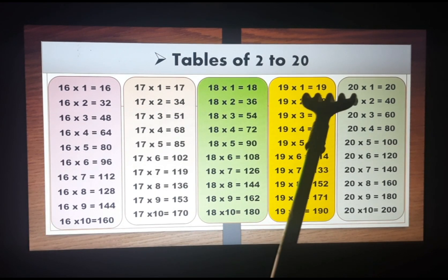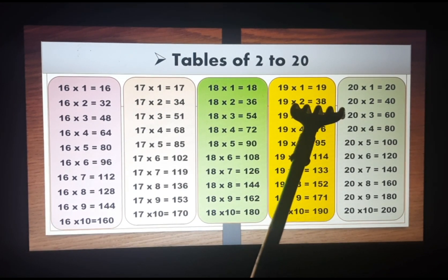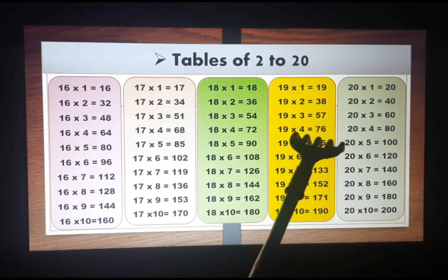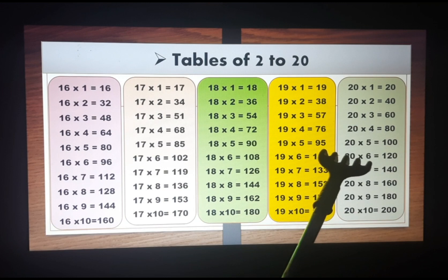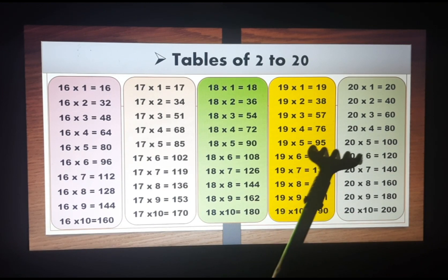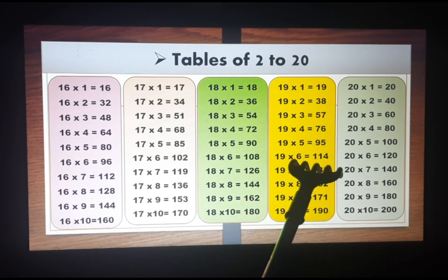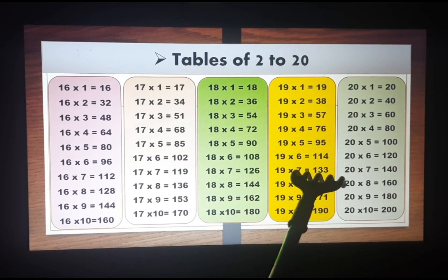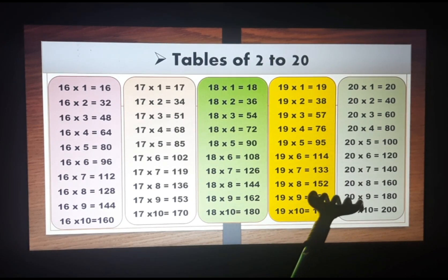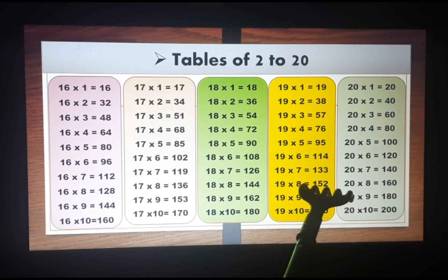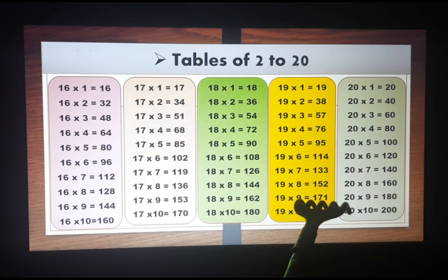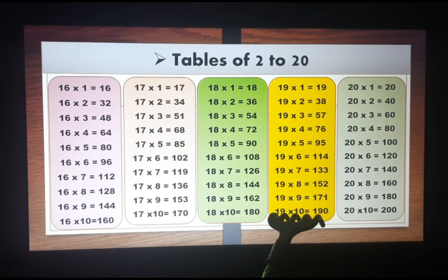Nineteen ones are nineteen, nineteen twos are thirty-eight, nineteen threes are fifty-seven, nineteen fours are seventy-six, nineteen fives are ninety-five, nineteen sixes are one hundred fourteen, nineteen sevens are one hundred thirty-three, nineteen eights are one hundred fifty-two, nineteen nines are one hundred seventy-one, and nineteen tens are one hundred ninety.